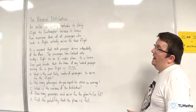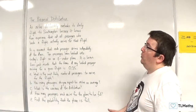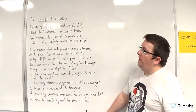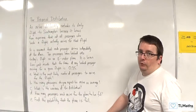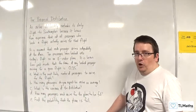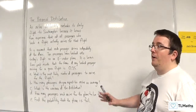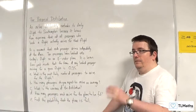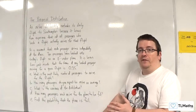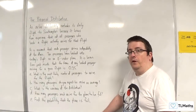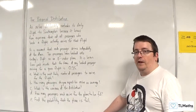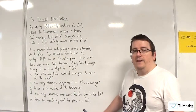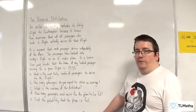In this problem, an airline deliberately overbooks its daily flight to Southampton because it knows from experience that not all passengers who book a flight actually arrive for that flight. This is common practice. I've been caught up by this myself, where I've got to the gate, ready for the flight, and they said the flight's full, even though I've booked a ticket. So the consequence is that the airline company would have to refund you.